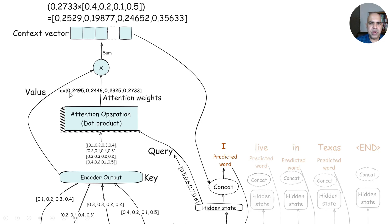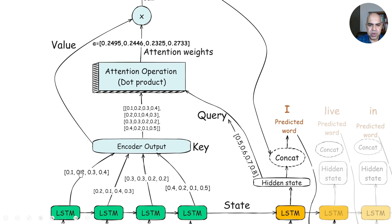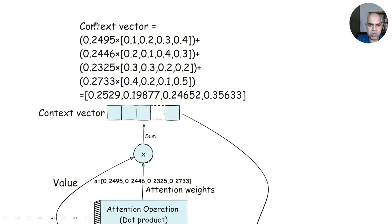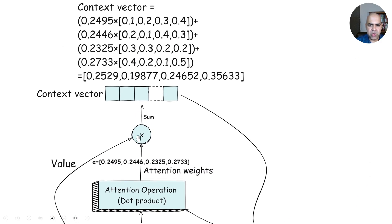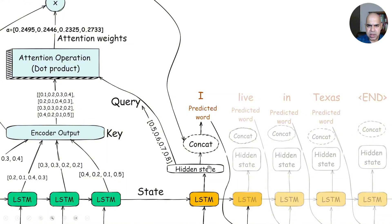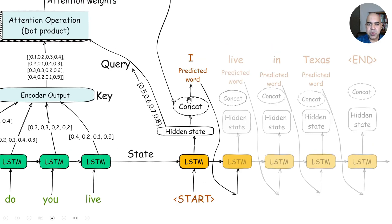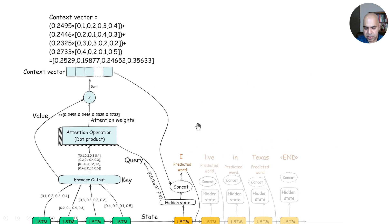After the attention weights are calculated, each hidden state vector is multiplied by the corresponding attention weight. The first hidden state vector is multiplied by 0.2495, the second by 0.2446, and so forth. All of them are added together to produce the context vector, which is then concatenated with the hidden state generated for the current word 'start'. This entire process repeats each iteration. Query, key, and value are computed during the process.